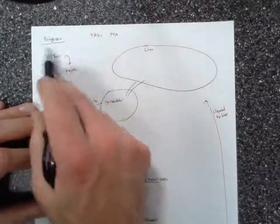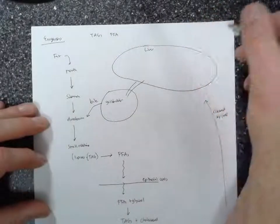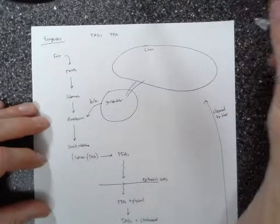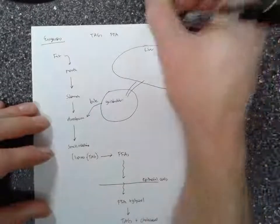So that is exogenous. That's dietary fats. There's also a way that our bodies can produce and transport triacylglycerols endogenously.